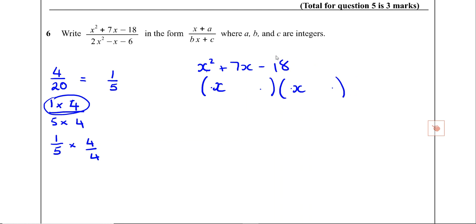We know one number is positive and one is negative — that's the only way to multiply to get a negative. They add together to make positive 7, and if a positive and negative add to give a positive result, the larger number must be positive. Two numbers that multiply to make 18 and add to make 7: that's 9 and 2. The larger must be positive 9, so it's positive 9 and negative 2. So we have x plus 9, x subtract 2 — that's the numerator factorised.